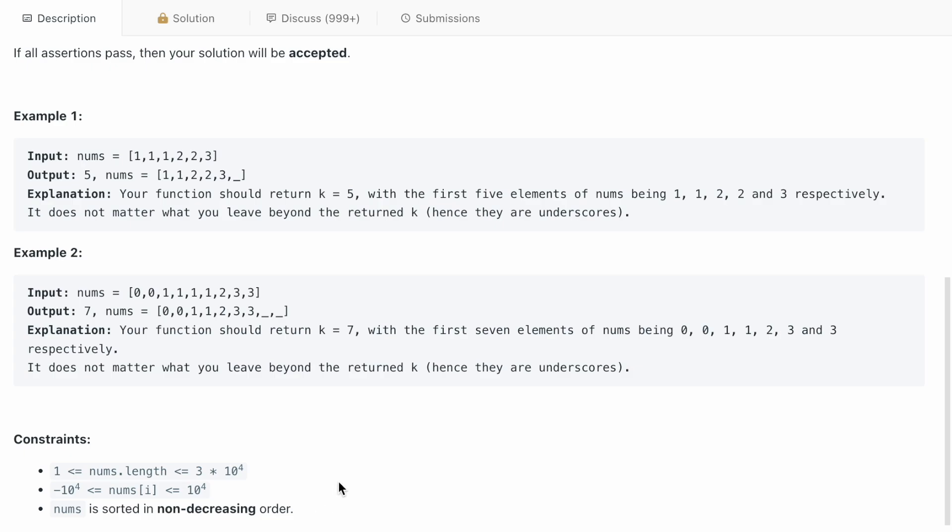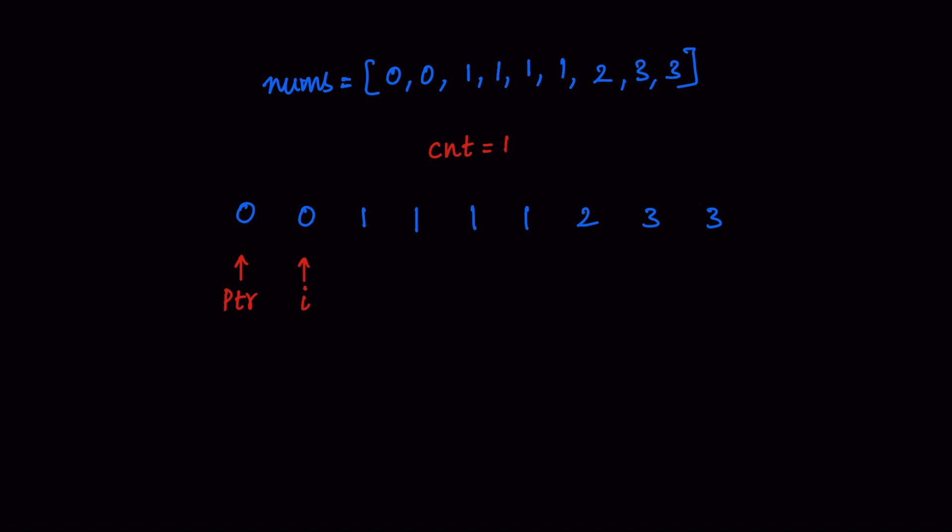I hope the question description is very clear. Let's go into the explanation part. For the purpose of explanation, I am considering example 2. I have written the nums array below and I am making use of PTR to track the unique elements, CTR to give the count of unique elements, and i for iterating through the nums array. Since PTR is located at the 0 value, we initially maintain the count value as 1.